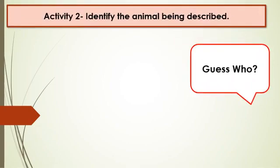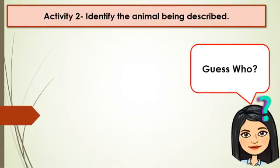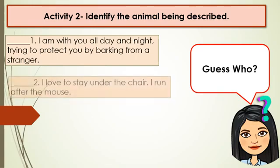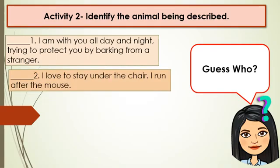Let's try to answer Activity 2: Identify the animal being described — Guess who? Number 1: I am with you all day and night, trying to protect you by barking at a stranger. Guess who? Number 2: I love to stay under the chair and ran after the mouse. Guess who?